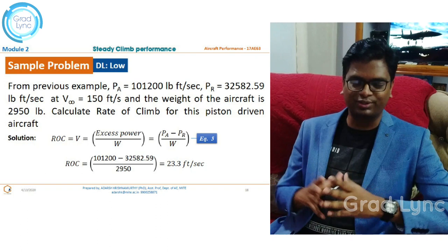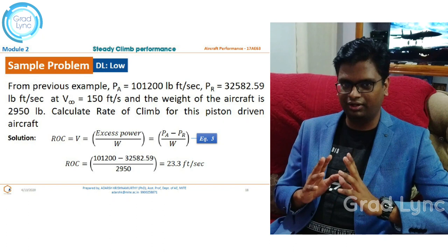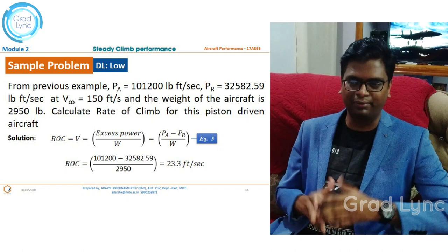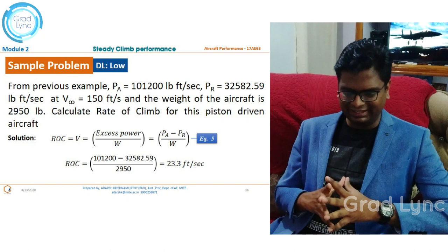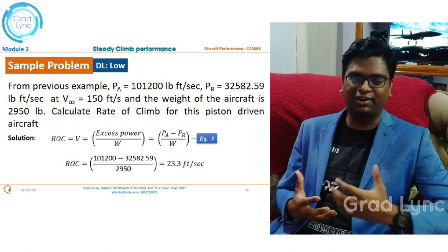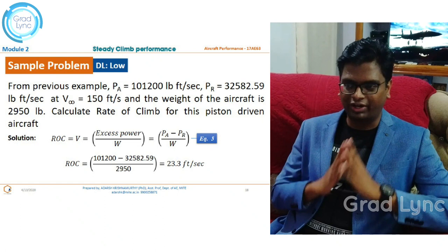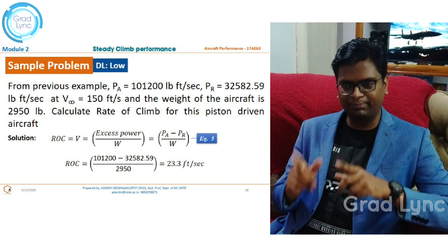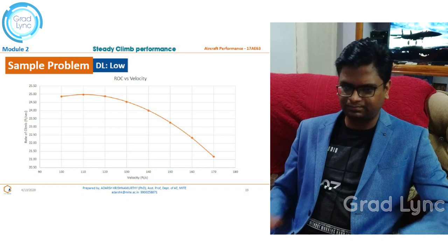For a piston engine, the power available remains constant whereas the power required varies with velocity. We are not drawing the graph here — just calculating the rate of climb. Substituting all values into the equation, I get the rate of climb as 23.3 feet per second. This means the aircraft gains an altitude of 23.3 feet every second at a velocity of 150 feet per second, where the power required is 32,582 pound-feet per second.